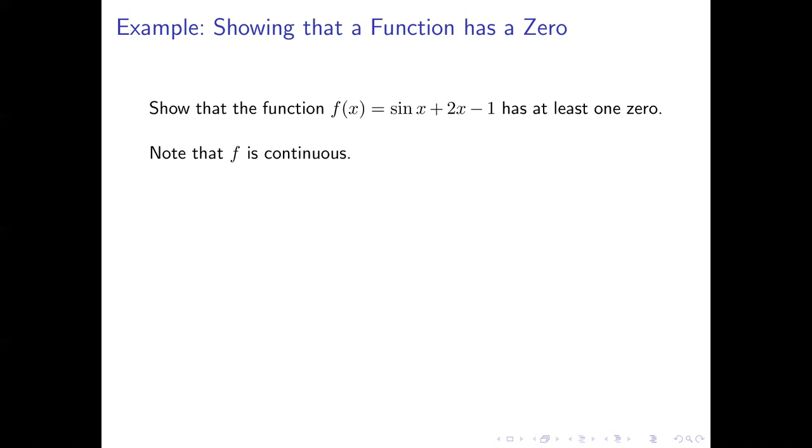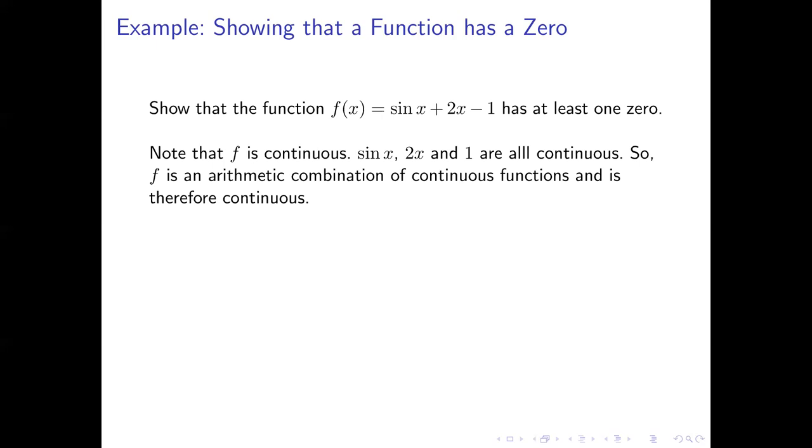We'll show that this function has at least one zero. The first thing to note is that this function is continuous. The reason is because all of its parts are continuous. The sin(x), 2x, and 1 all define continuous functions, and when you add and subtract continuous functions, the result is still continuous. More generally, arithmetic combinations of continuous functions are continuous, as long as you don't end up dividing by zero. So the function in question satisfies the condition for the intermediate value theorem. It's continuous everywhere, and so it's continuous over any of its domain intervals.